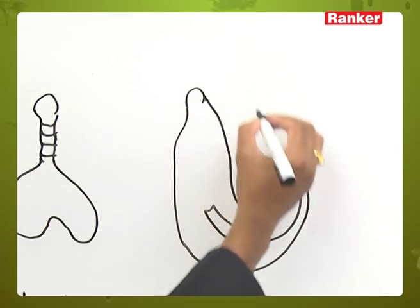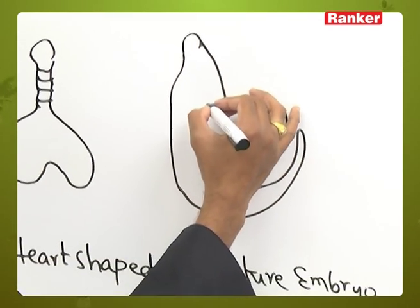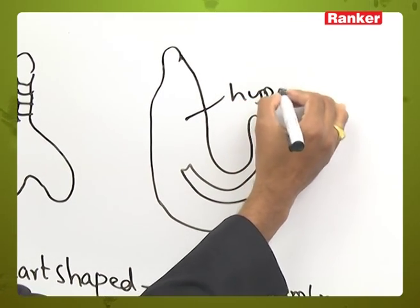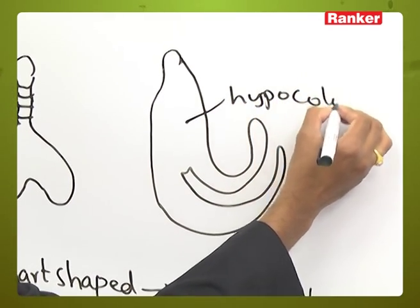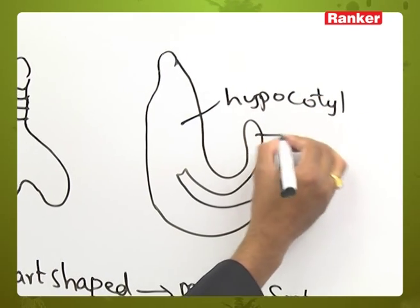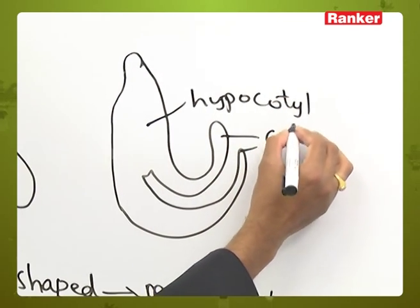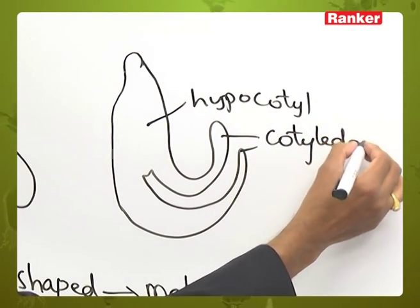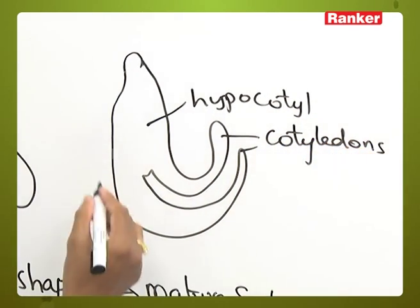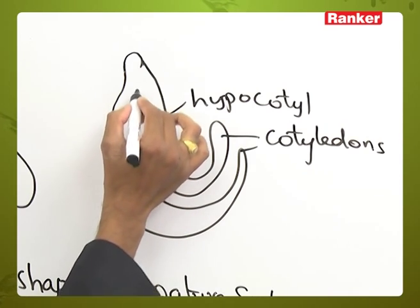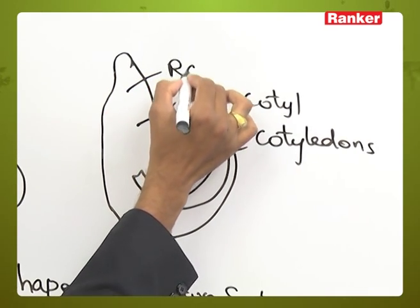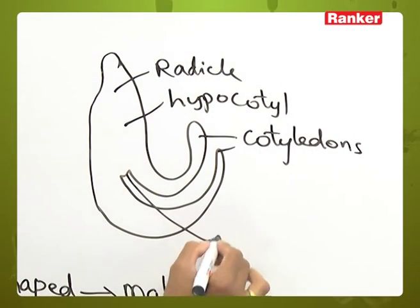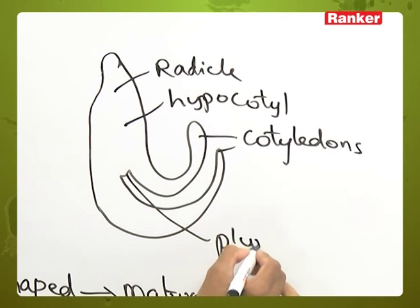In the matured embryo we can see the hypocotyl. These are the cotyledons. This forms the radicle, and this is the plumule.